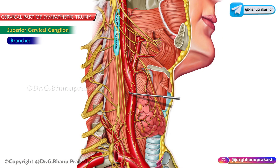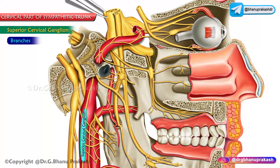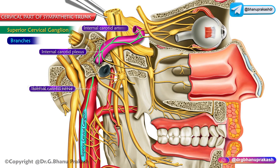The cervical sympathetic trunk does not receive white rami communicantes but contains gray rami communicantes, which pass into the ventral rami of the upper four cervical nerves. The internal carotid nerve arises from the upper end of the superior cervical ganglion and forms a plexus around the internal carotid artery.